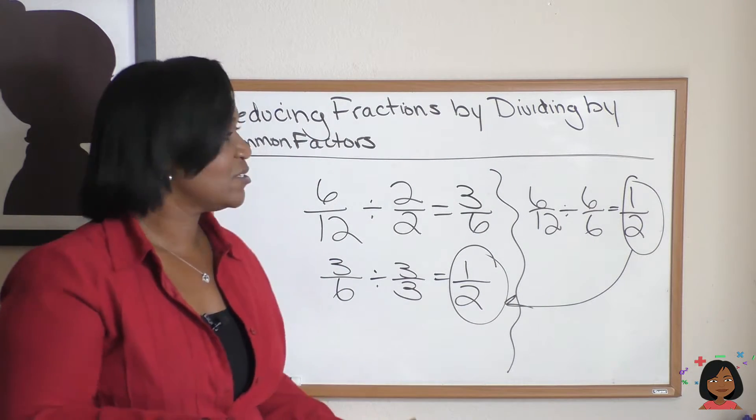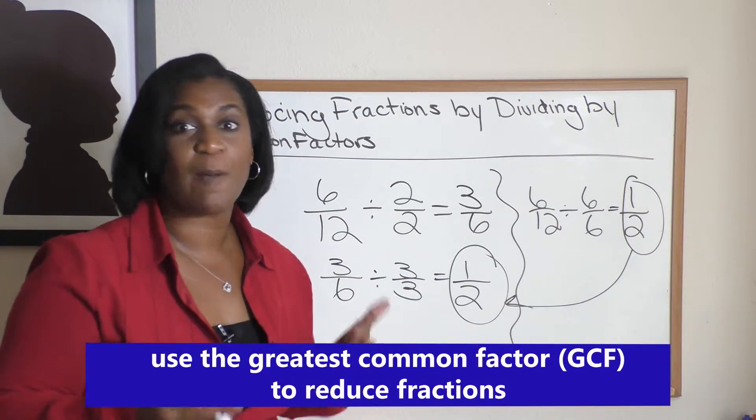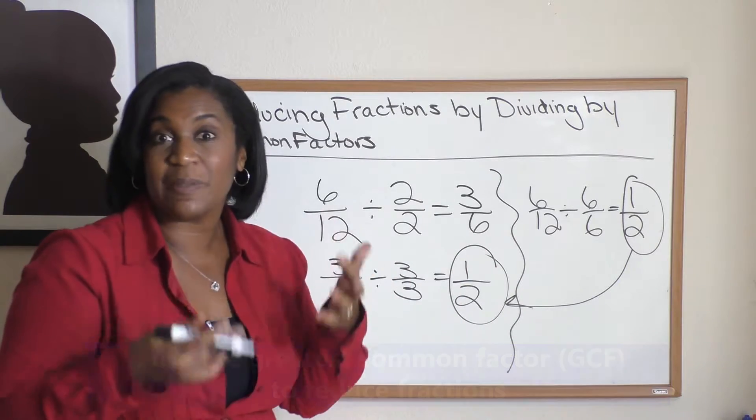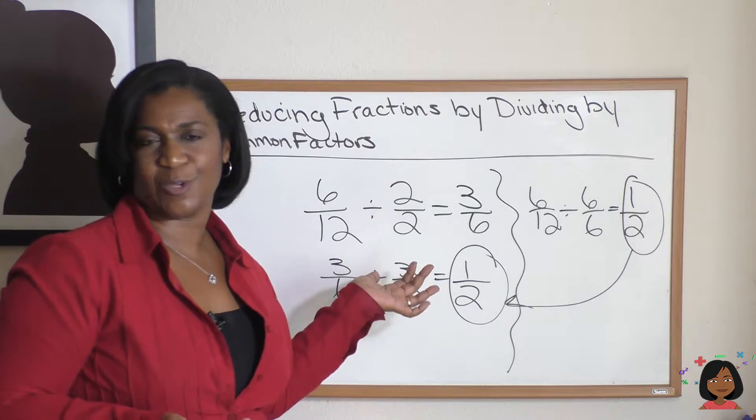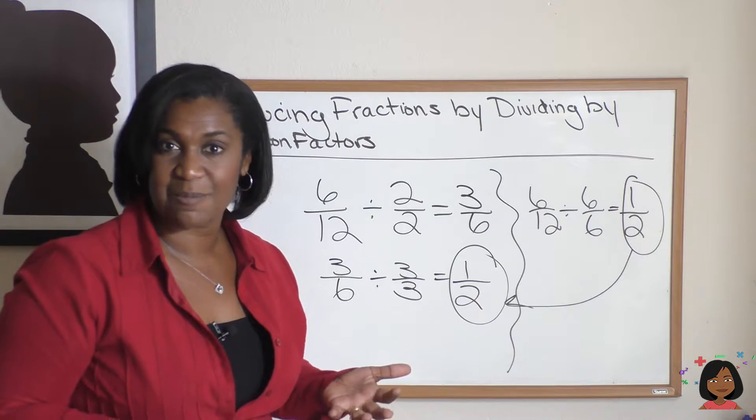So the rule is when trying to reduce fractions, pick the greatest common factor that you can, and that'll just give you a little bit less work when trying to reduce it. It's definitely not wrong to do it this way. You just want to keep doing it until you get down to a number that can't be reduced anymore.